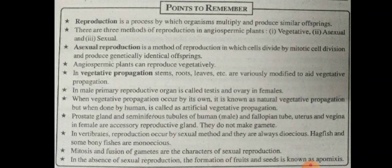In vertebrates, reproduction occurs by sexual method and they are always dioecious.